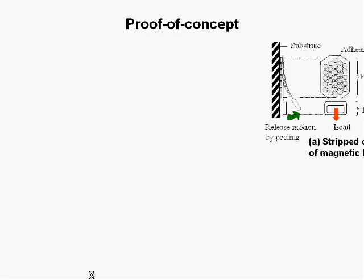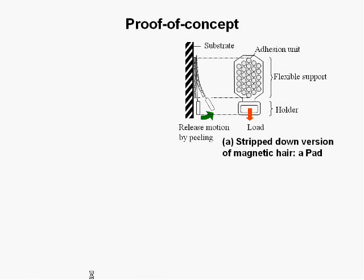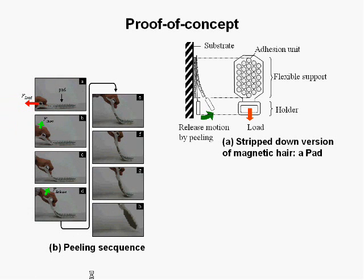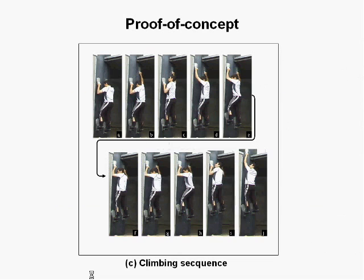Now let me show you a bit in detail about the magnetic pad. It is formed by a holder, a flexible support, and magnet units. The flexible support provides enough compliance to adapt to round surfaces. On the left we have a peeling sequence with magnetic pad. And this is a man testing the pad. The performance of the system approaches one percent.